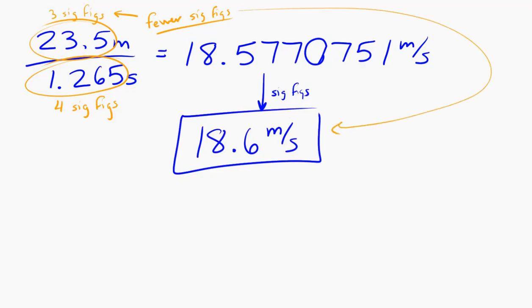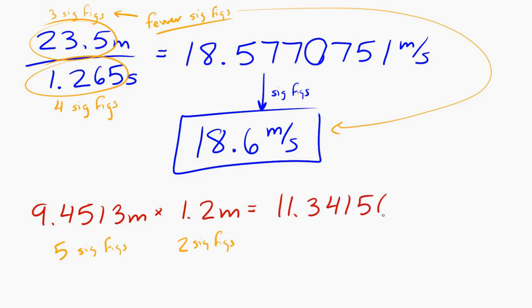One more example. 9.4513 meters times 1.2 meters. So we have five significant figures, two significant figures. We multiply the numbers together. We get 11.34156 meters squared. If we round that to two sig figs like we should, that's 11 square meters.